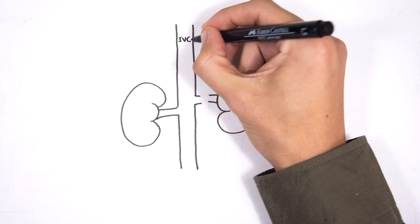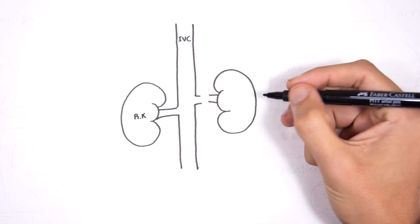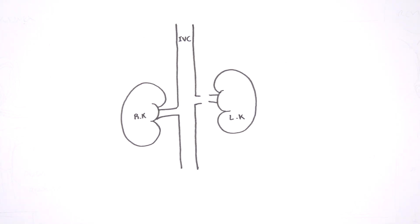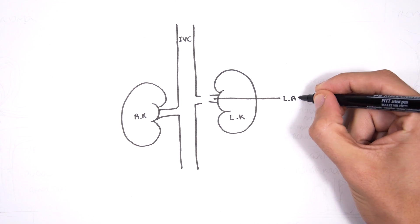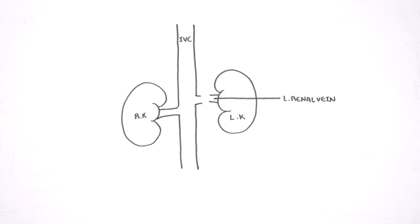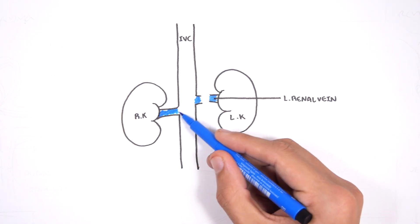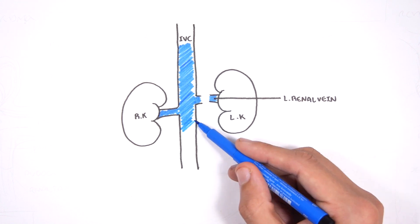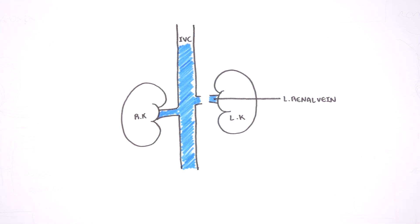Here I'm drawing the inferior vena cava and here you have your right kidney and your left kidney. If we're looking at this front on, in the very front here you have the renal veins draining into the inferior vena cava. The right and left renal veins drain into the inferior vena cava.